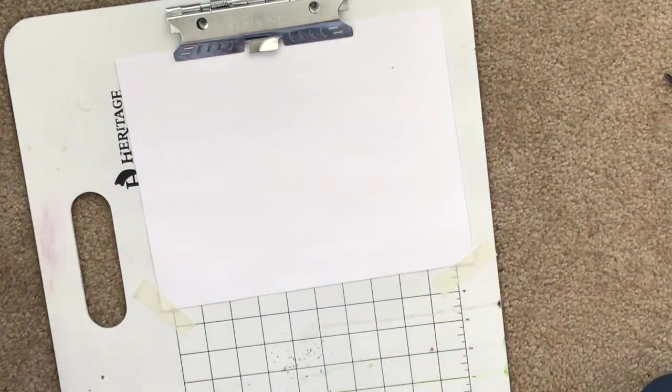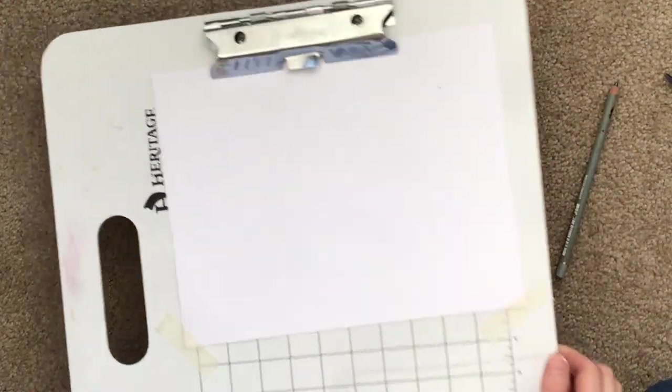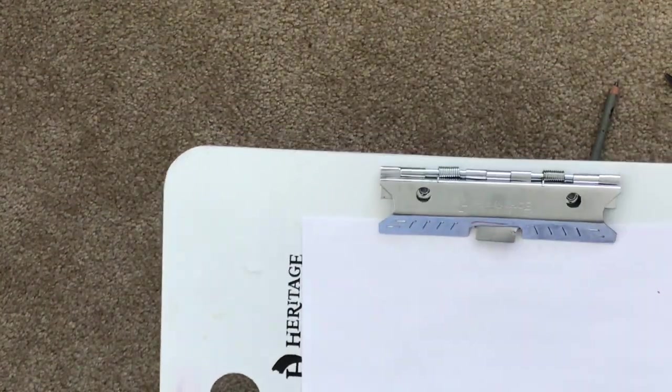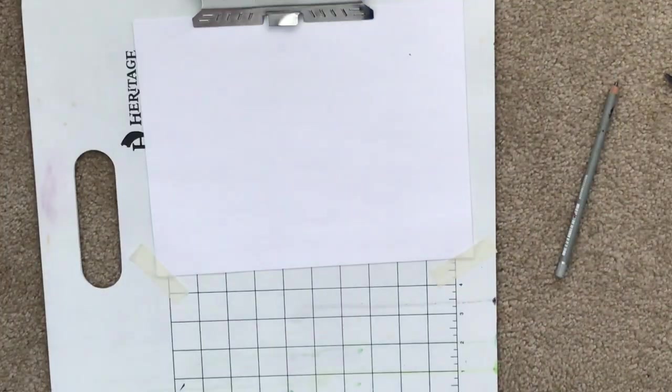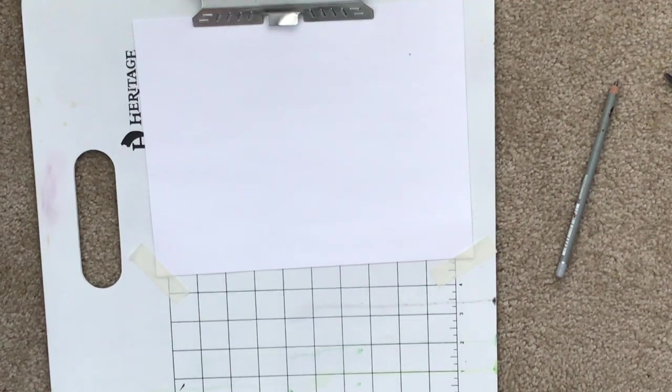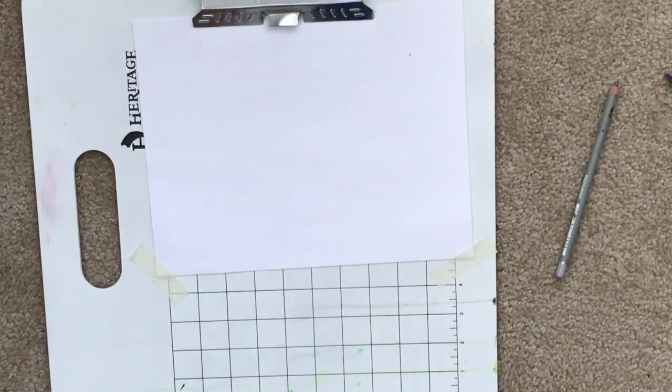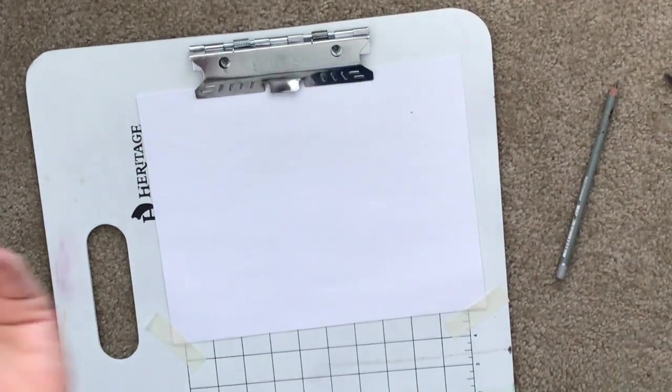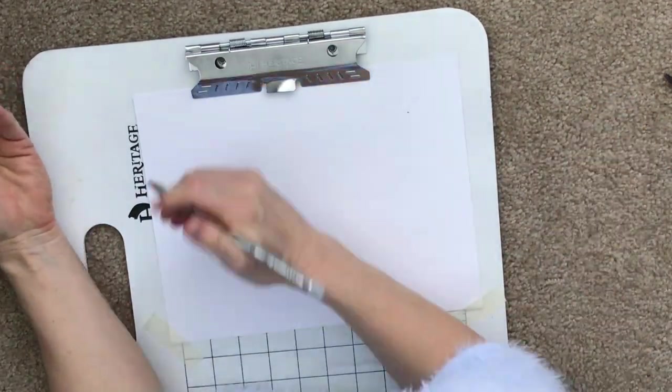Just a quick review of the five perceptual skills of drawing Betty teaches: number one, perception of edges; number two, perception of spaces; three, perception of relationships; four, perception of lights and shadows; five, perception of the whole.